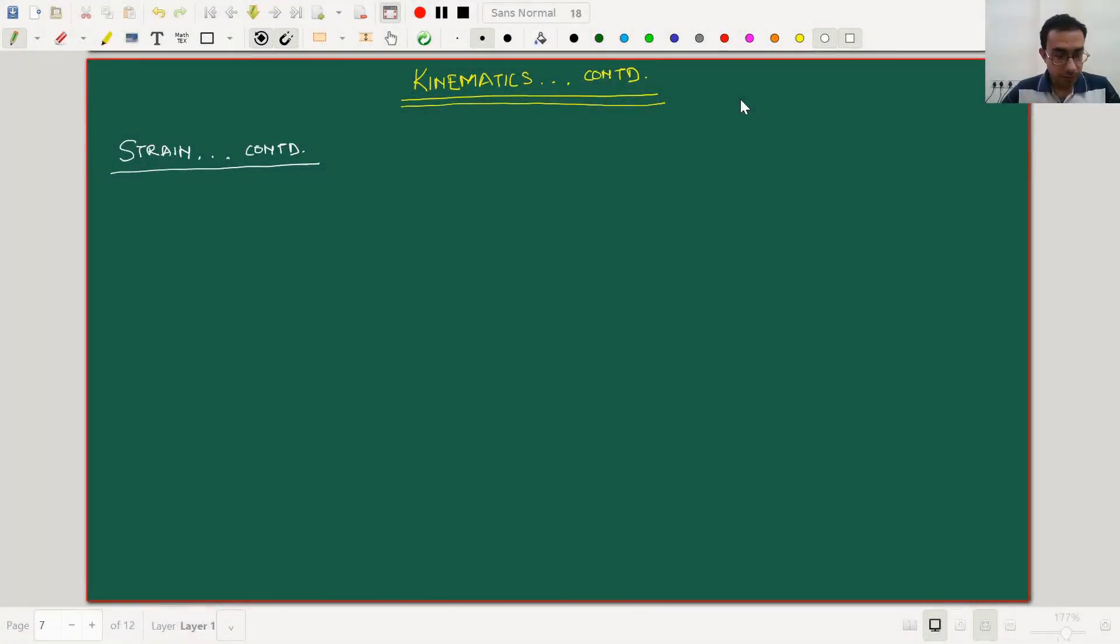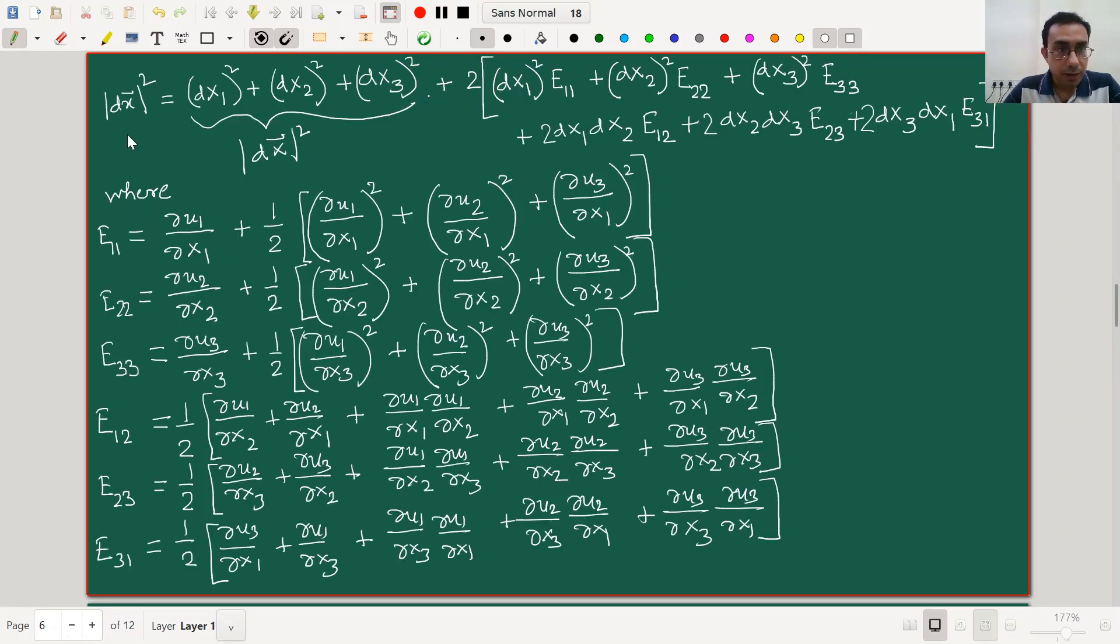Hello everyone, we will continue our discussion of the kinematics chapter with strain. In the previous part of the lecture, we had seen that the magnitude square of d small x can be expressed by this large expression where each one of e11, e22, etc., are given by these huge expressions in turn.